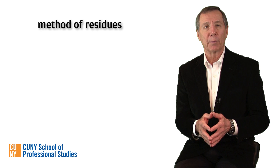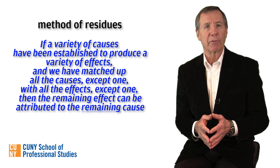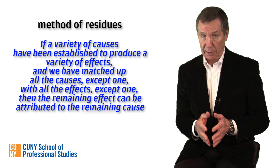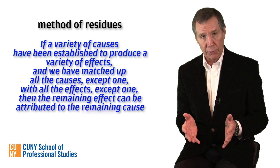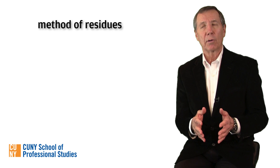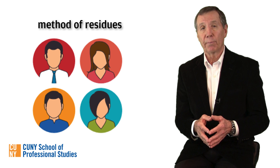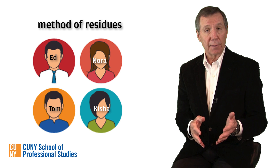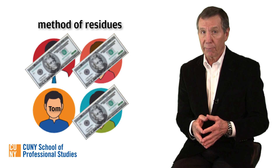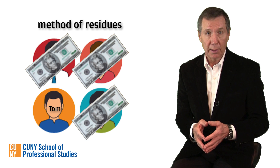The method of residues also can be used to determine a probable cause. If a variety of causes have been established to produce a variety of effects, and we've matched up all the causes, except one, with all the effects, except one, then the remaining effect can be attributed to the remaining cause. Here's an example: I know that a total of $100 has been donated to our local food pantry, and that just four people contributed—Ed, Nora, Keisha, and Tom. Each of the first three gave $20. There's a remaining $40 that needs to be accounted for, and there's only one donor left who can be responsible. Tom is the residue, so he must be the donor.